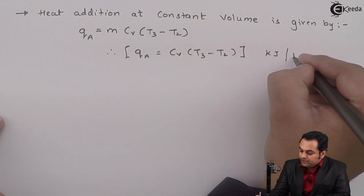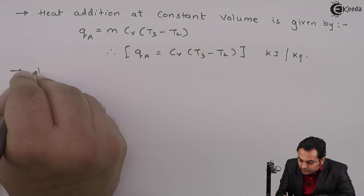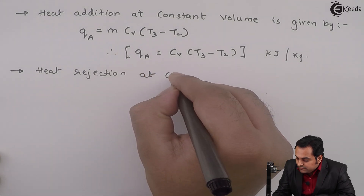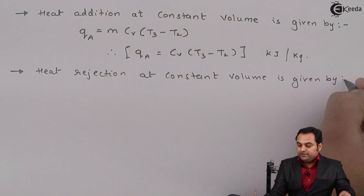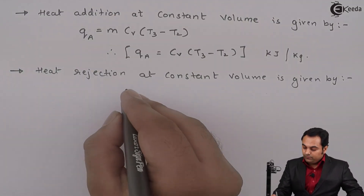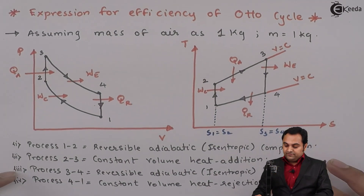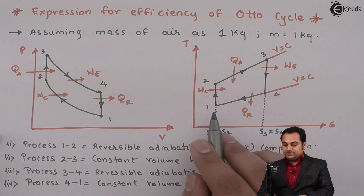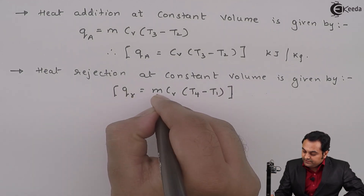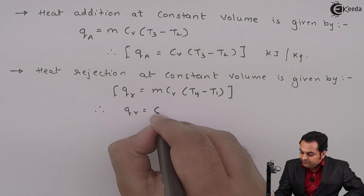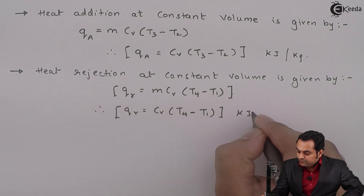After heat addition, now I will write heat rejection. Heat is also rejected at constant volume, from point 4 to 1. So QR = m·Cv·(T4 − T1). Here we have the heat rejection temperature difference T4 − T1. Since mass is taken as 1 kg, heat rejection QR = Cv·(T4 − T1), in kJ/kg.